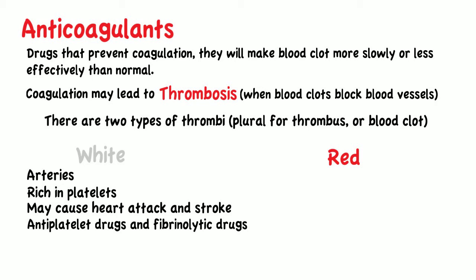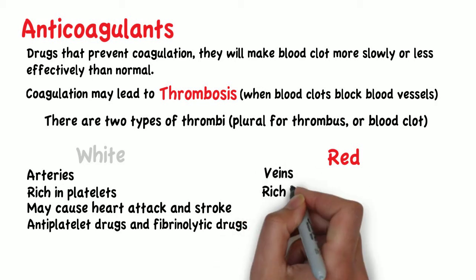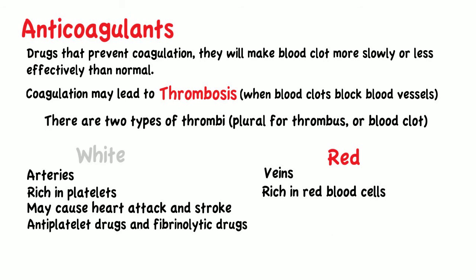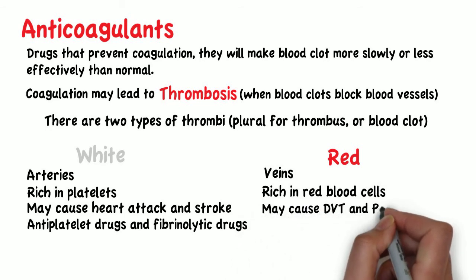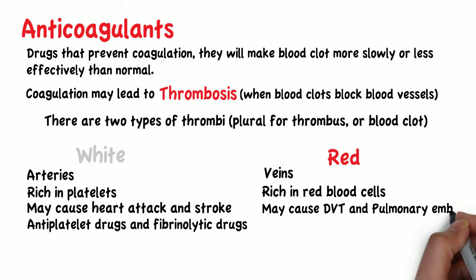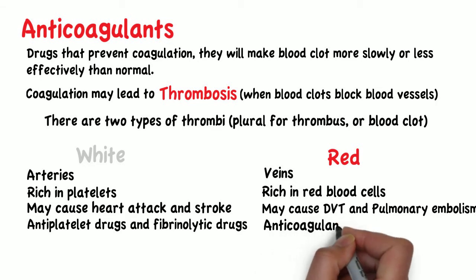Red thrombi are formed in the lumen of veins and are rich in red blood cells. These are common causes of deep vein thrombosis and pulmonary embolisms, for example. To treat these thrombi, we use anticoagulants, which will be described in this video.